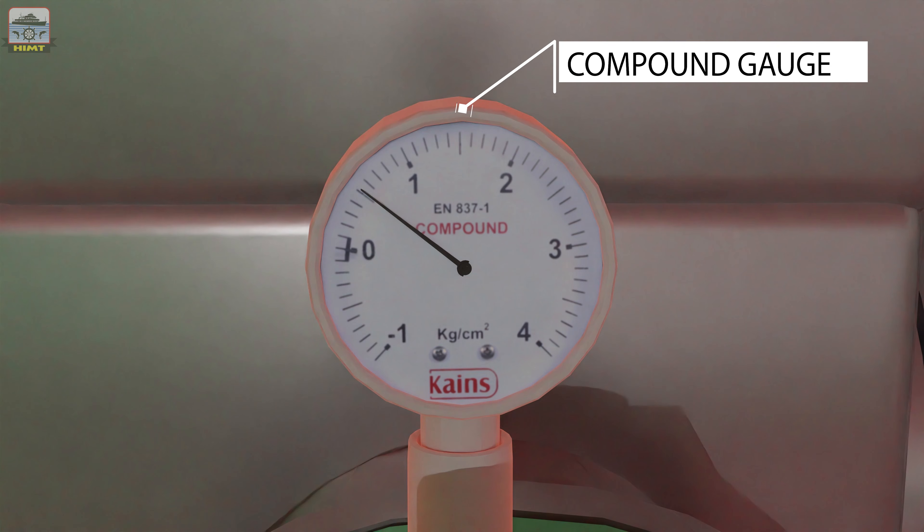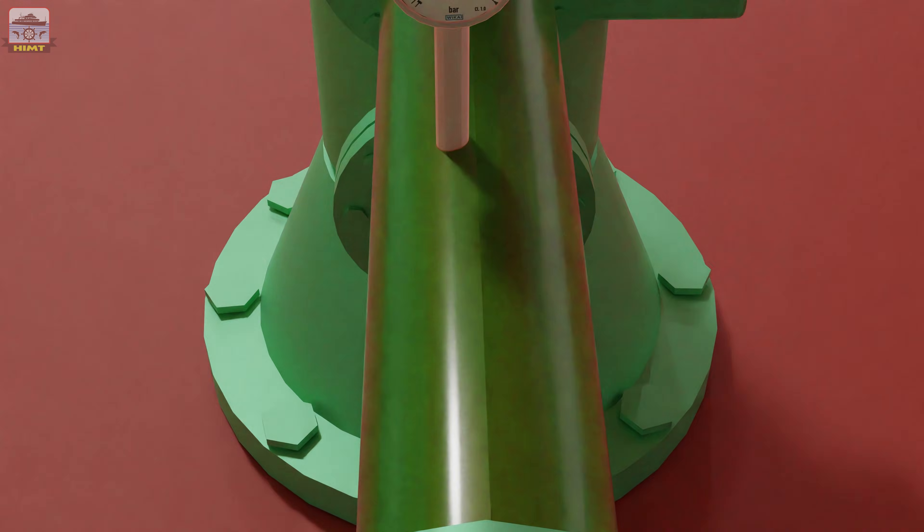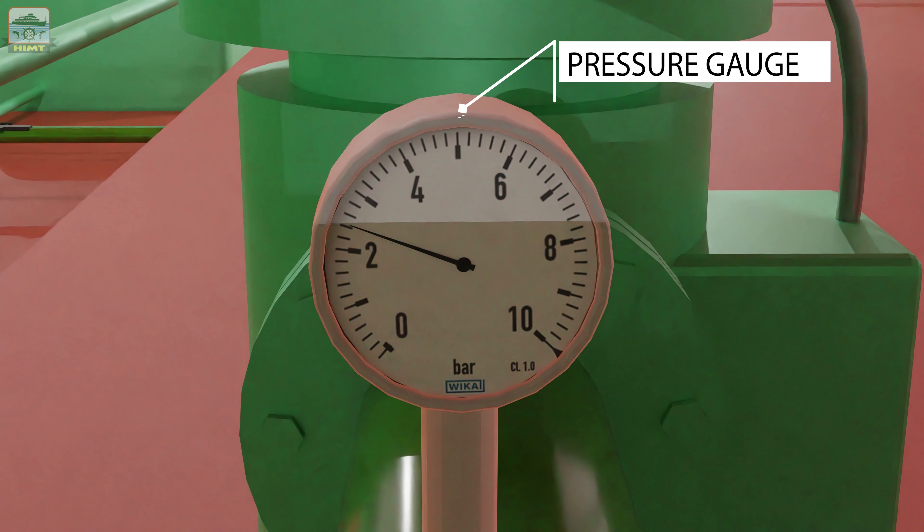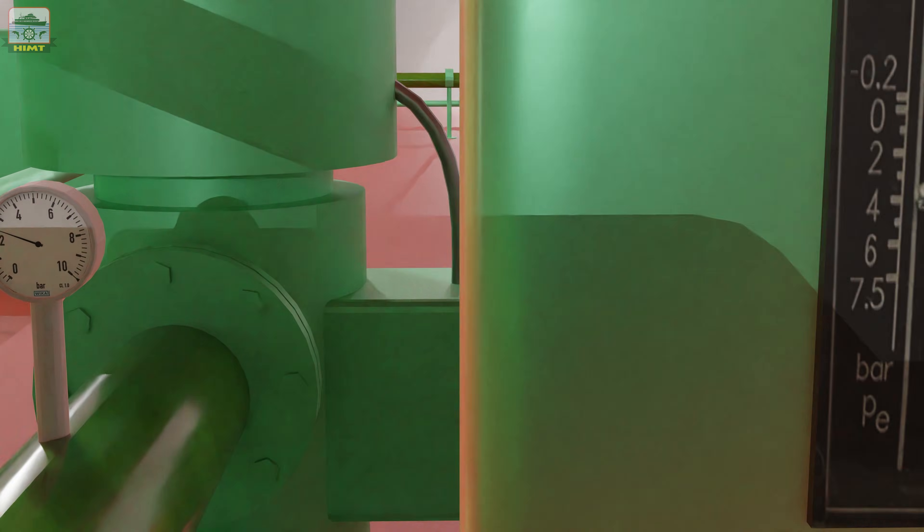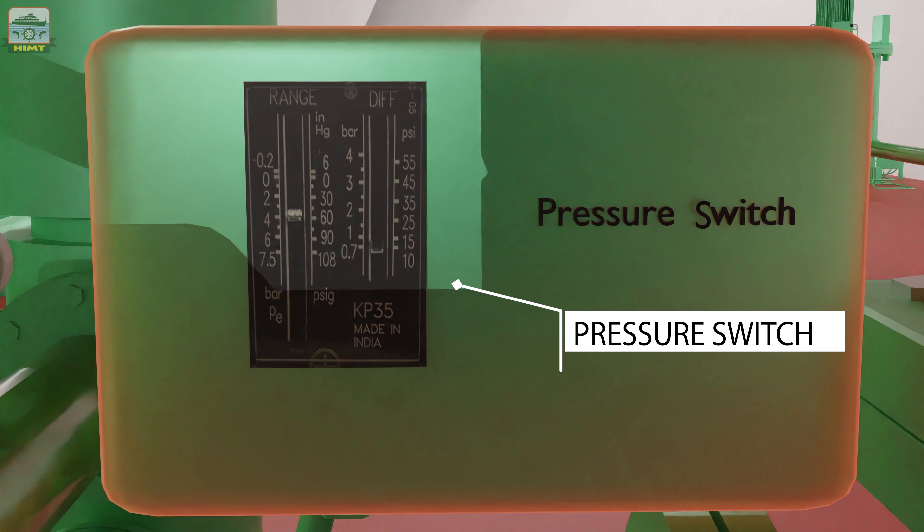A compound gauge at the suction side of the pump, a pressure gauge at the discharge side of the pump, and a pressure switch at the discharge side to give low pump discharge pressure alarm and start the standby pump automatically.